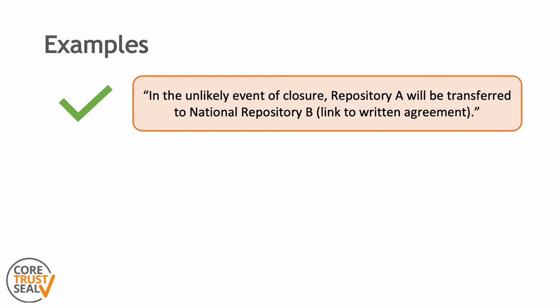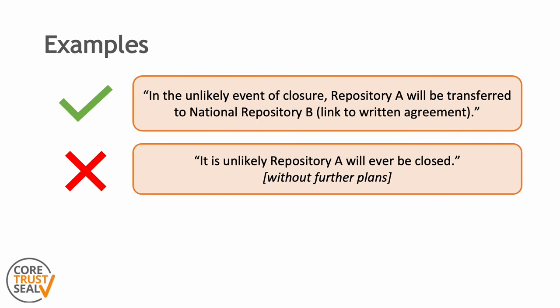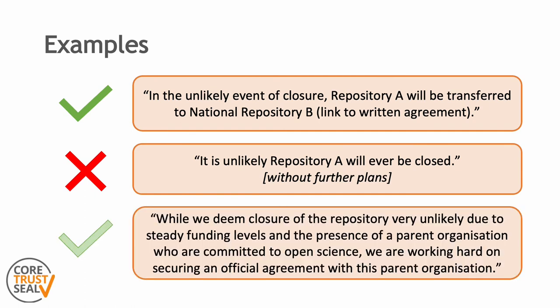Here are some examples — please note that these are made up and only partial examples, just some phrases, not the complete requirement text that would be assumed to be there. The first example is a good example: the repository clearly has succession planning in place and there is evidence for it in a written agreement. The second example is a bad example: it is not acceptable to just assume that the repository will not be closed; it is necessary to show succession planning is in place, even if it is unlikely that the plans are needed. The third example is good, even though not perfect — the repository clearly shows that they are working on it, and in this case it would be acceptable for an in progress status. This would not prevent the awarding of a Core Trust Seal since it has explained what the situation is and what is being done about it.